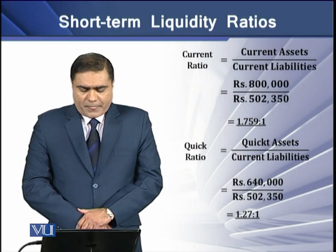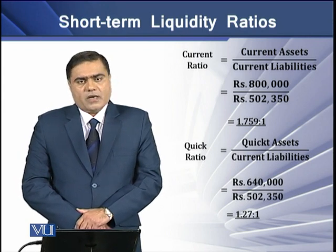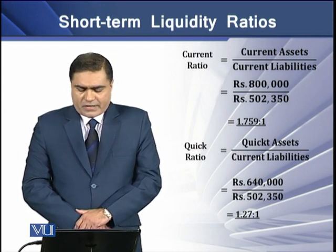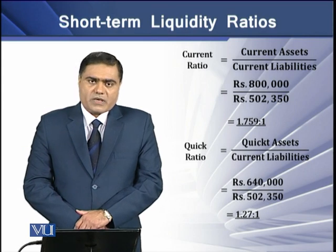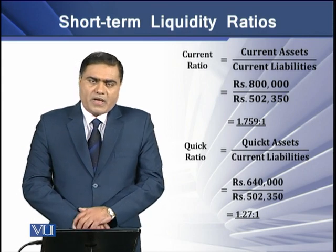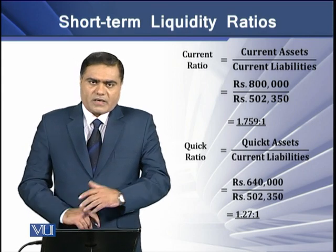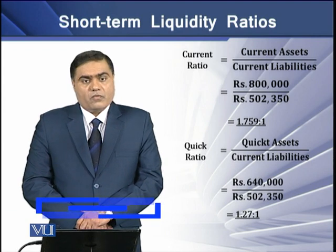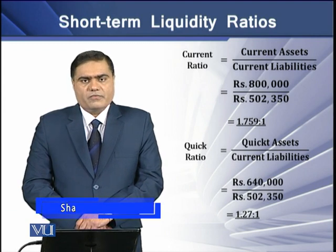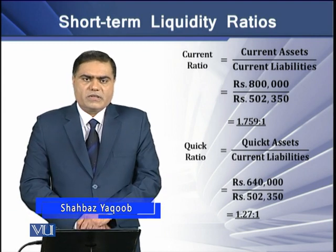For example, we have current assets of Rs. 8,000,000 and current liabilities of Rs. 5,02,350. If we divide current assets by current liabilities, the answer comes to 1.759 or 1.76.